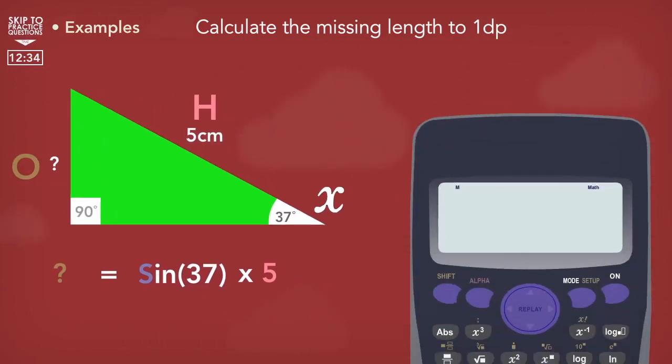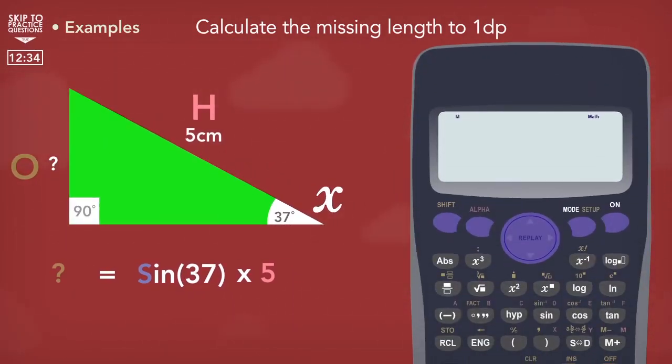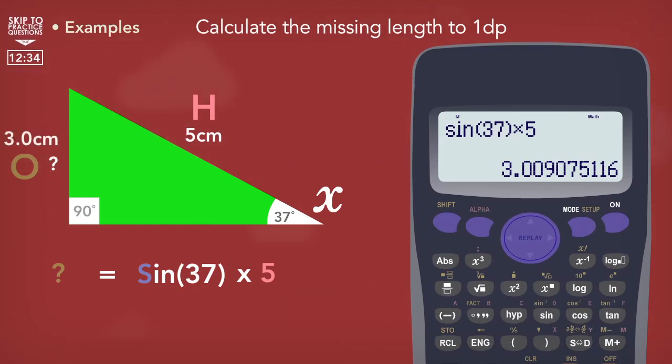The way that we calculate this is by using our scientific calculator. So first we press sine on the calculator and then type 37. Make sure the 37 is closed in brackets, and then we multiply this by five. Press equals. And the answer to the distance of the opposite equals 3.009075116 or something along those lines. The question asks us to round it to one decimal place, so after we've written all of that down, we can round to 3.0 centimeters.